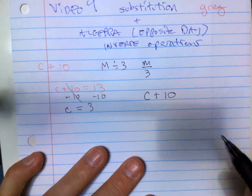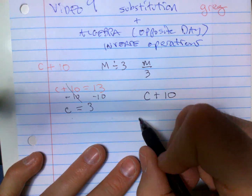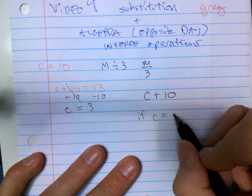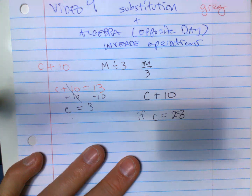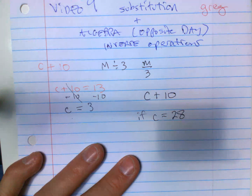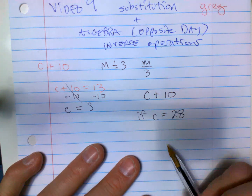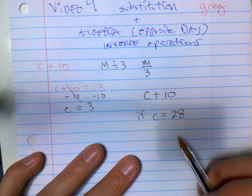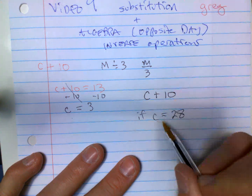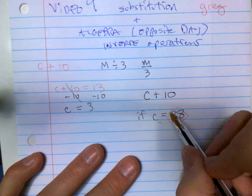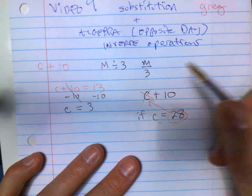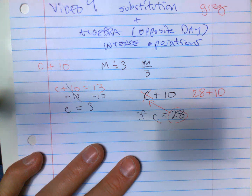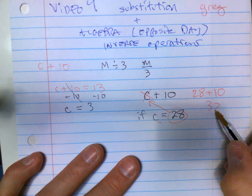A number of kids every time will be like, what am I supposed to do? They're telling you what C equals. So you're going to replace the C with 28 and have 28 plus 10. That's called substitution — you're going to have 38. All right, so let's look at some algebra.